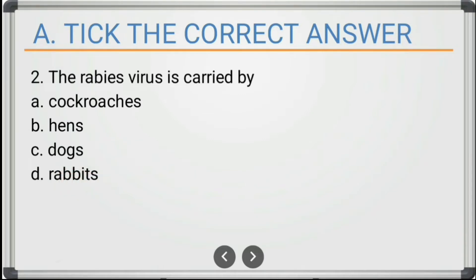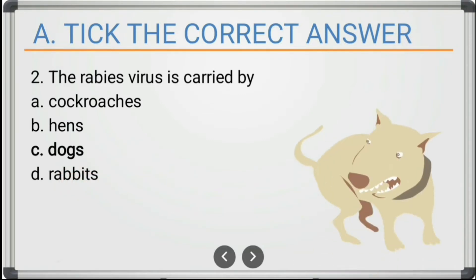The next question: the rabies virus is carried by — the options are cockroaches, hens, dogs, or rabbits. The correct answer is dogs.